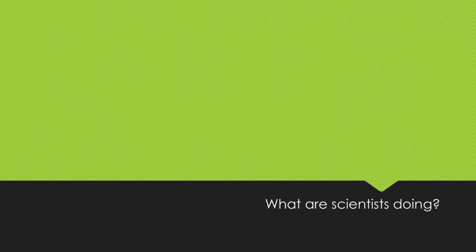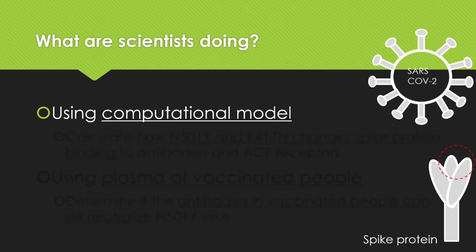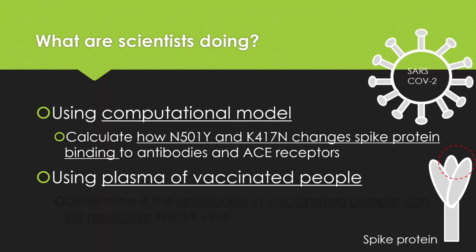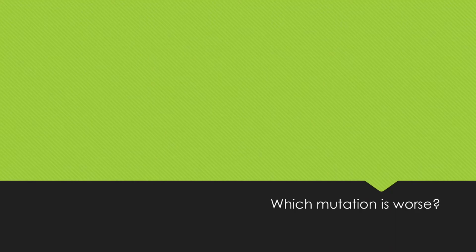Let's look at fact number one: what are scientists doing? I found two major studies still in preprint that are available online. The first uses a computational model — using a computer to predict and calculate how N501Y and K417N change the spike protein and how it binds to antibodies and ACE2 receptors. The second uses plasma of vaccinated people in an actual experiment to determine if the antibodies in these vaccinated people can still neutralize 501Y viruses.